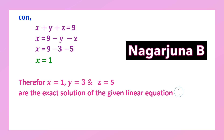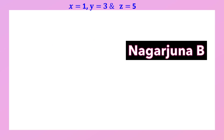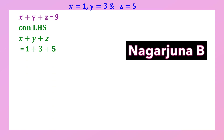This is the way of solving a system of equations using Gauss elimination method. We can verify the answer. For the first equation, LHS = x plus y plus z = 1 plus 3 plus 5 = 9 = RHS. The values are correct for the first equation.